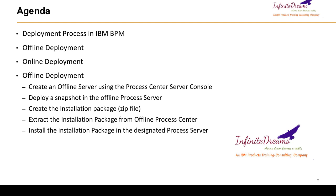As we know, in online deployment your process server will be directly connected to the process center, and from the process center you can deploy the snapshots directly to the development, acceptance, test, or production process server. But in other way, the offline deployment is a traditional approach.